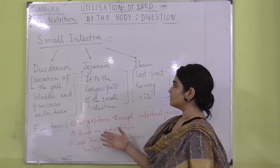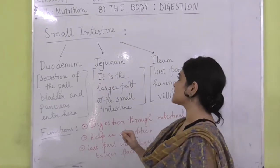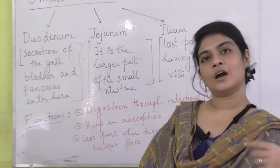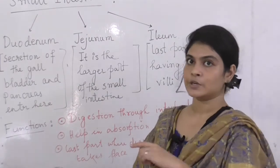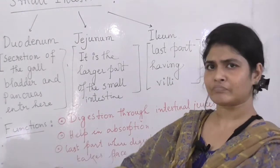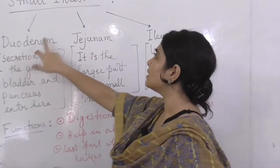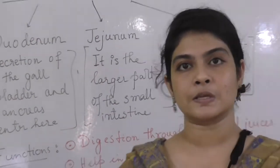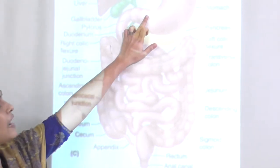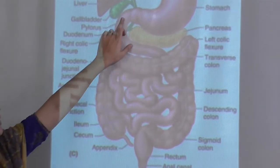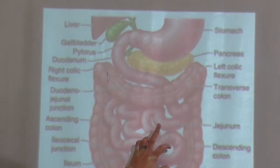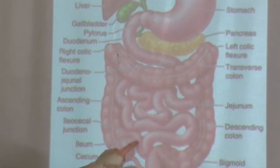Now we come to the small intestine. The entire GI tract has four layers of tissues, and the small intestine is also lined by those same four layers. The small intestine has three parts: the first part is the duodenum — the anterior part where the stomach ends; the second is the jejunum — the deeply curved, largest part; and the third is the ileum — the very last part of the small intestine.